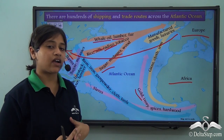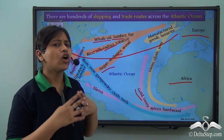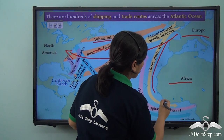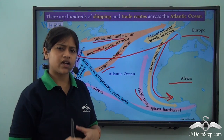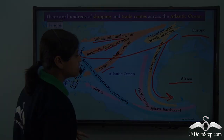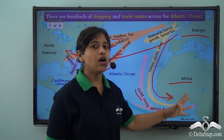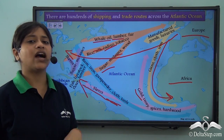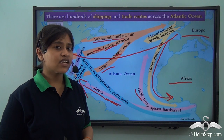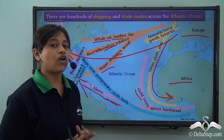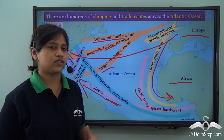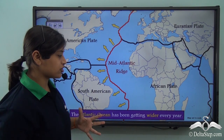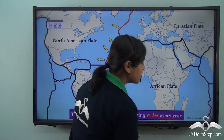Similarly, gold was taken from Africa, which has huge reserves of gold mines, and guns, cloth, and iron were imported back. Slaves from Africa were also taken to North America across the Atlantic Ocean. So the Atlantic Ocean holds a lot of historical importance.